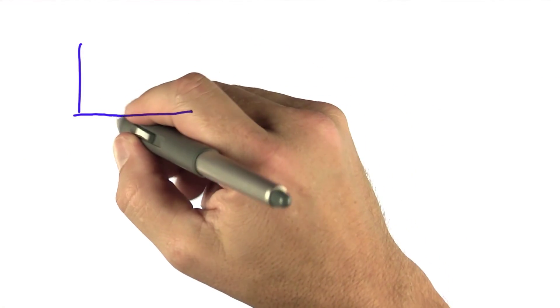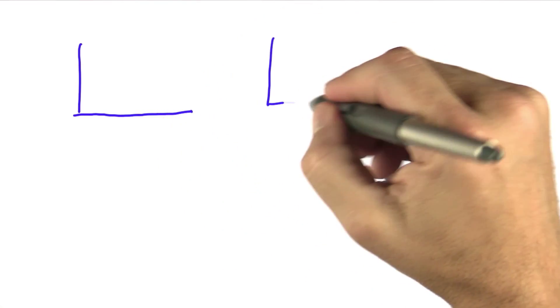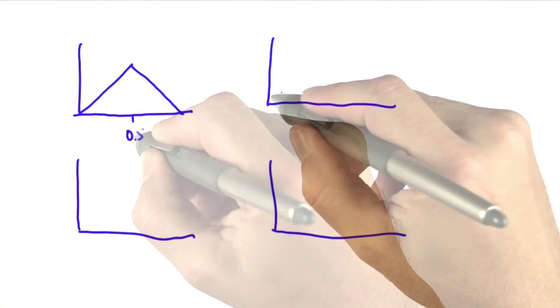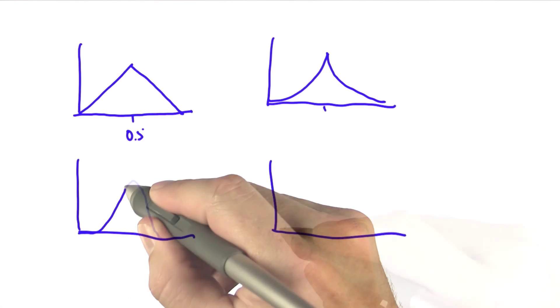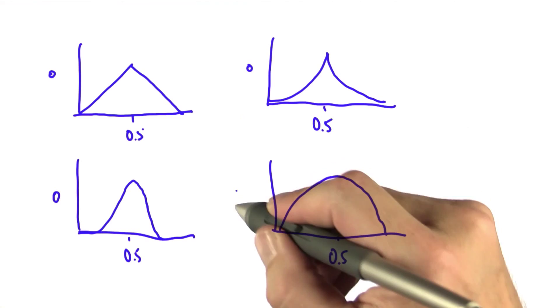When I do this, I get a whole bunch of means. When I run a histogram over those, I might see a curve. What shape do you think the curve has? It's going to be like this, it's going to be like this, like this, or like this, all focused on 0.5. Which one do you think is it?